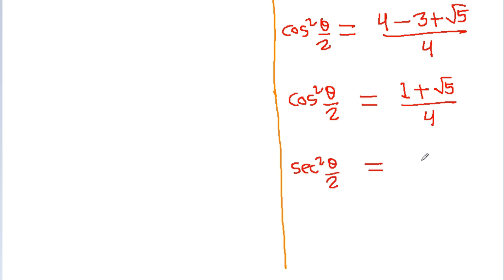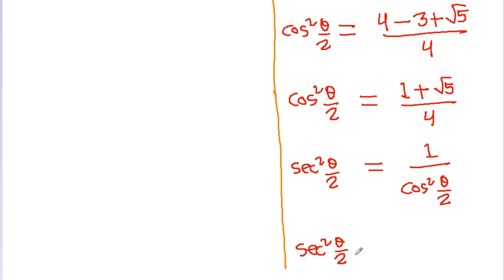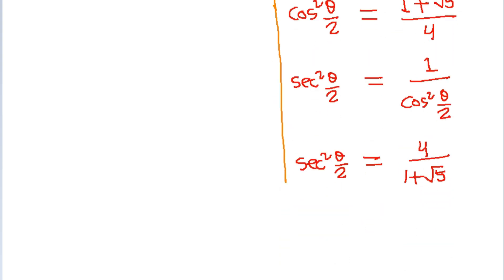sec²(θ/2) is equal to 1 by cos²(θ/2), so we get sec²(θ/2) is equal to 4 by (1 + √5).